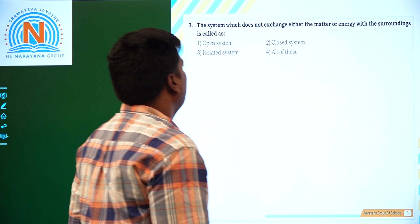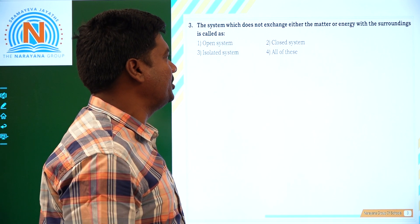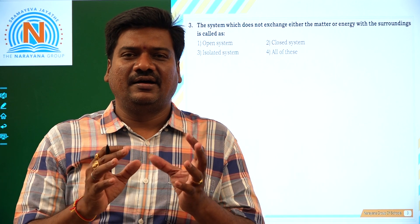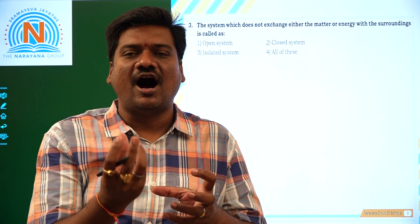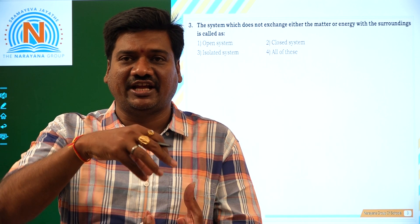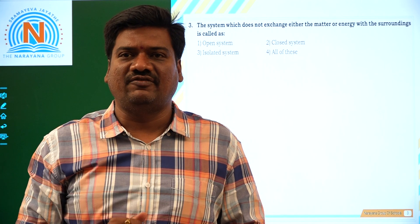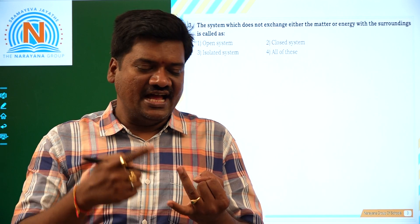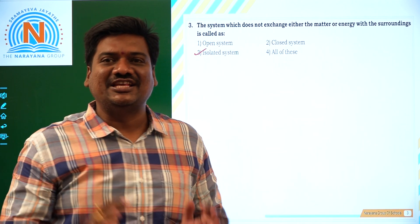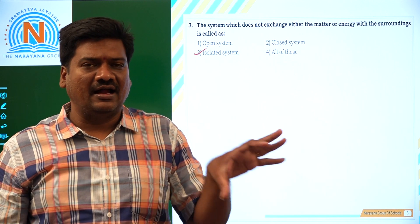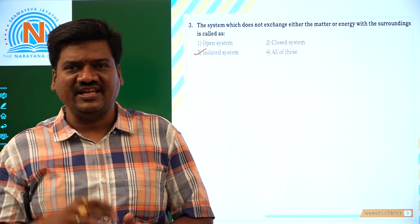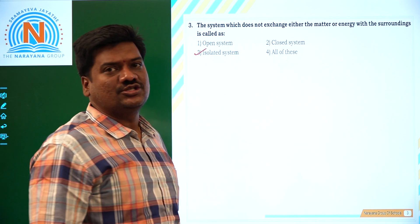Now come to the third question. The system which does not exchange either the matter or energy with the surroundings. If you take a thermos flask, inside the thermos flask, matter will be there and energy also will be inside — it will not come outside. Matter will not change and energy also will not change. Means from the system to surroundings there is no exchange of energy as well as matter. It is called an isolated system.